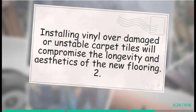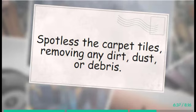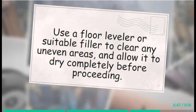Tip 2: Clean and level the carpet surface. Proper preparation is key to a successful vinyl flooring installation. Spotlessly clean the carpet tiles, removing any dirt, dust, or debris. Next, ensure that the surface is level and free of any bumps or imperfections that could impact the vinyl's adhesion. Use a floor leveler or suitable filler to clear any uneven areas and allow it to dry completely before proceeding.